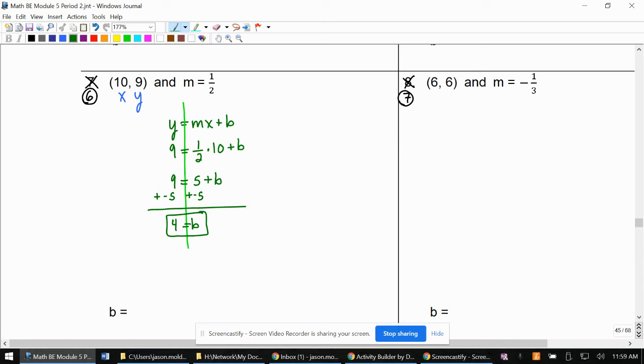So B equals 4, and then we're going to rebuild our equation in Y equals MX plus B. Make sure Y is still a variable. We'll plug in our M. X is still a variable, and we'll plug in our B. So our equation is Y equals 1 half X plus 4.